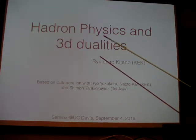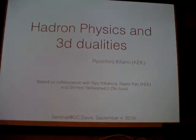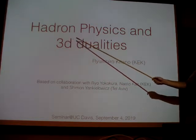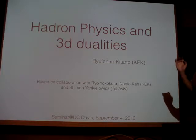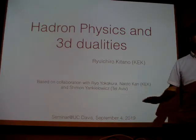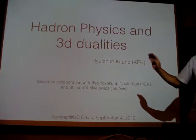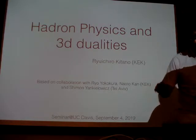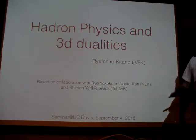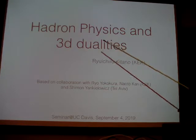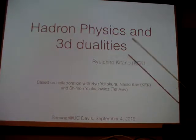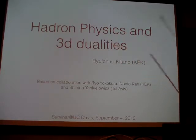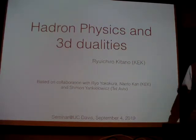Hadron physics and 3D dualities. I'm going to talk about axion physics. Hadron physics is tightly related to axions, but in this talk we don't have axions. So some QCD part is there. I'm trying to understand hadron physics by using some recently proposed 3D dualities. There's some relation between the 4D physics and 3D physics that I want to talk about.